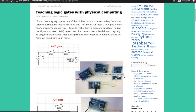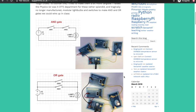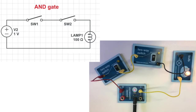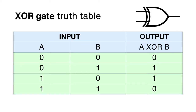Switches form the circuits that make up computers by making logic gates. Logic gates take simple binary inputs — on or off, one or zero — and make different outputs. An AND gate gives an output only if both its inputs are switched on. The OR gate will give an output if either of its inputs is turned on. The exclusive OR gate will give an output if either input is switched on, but not both.